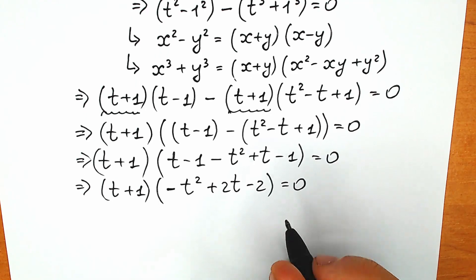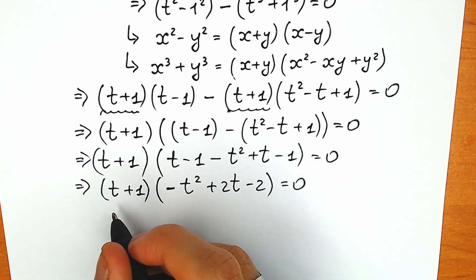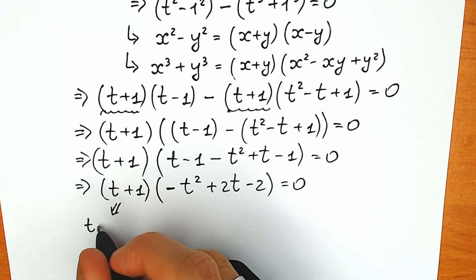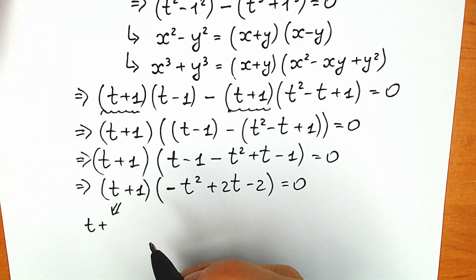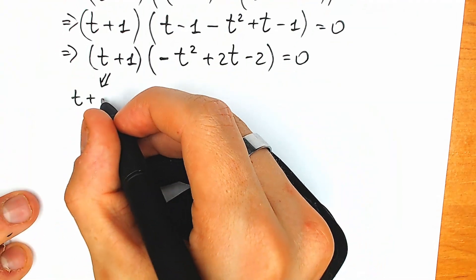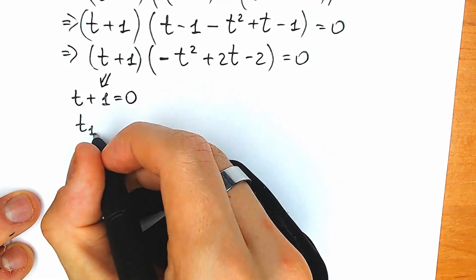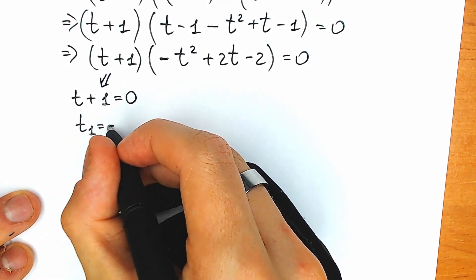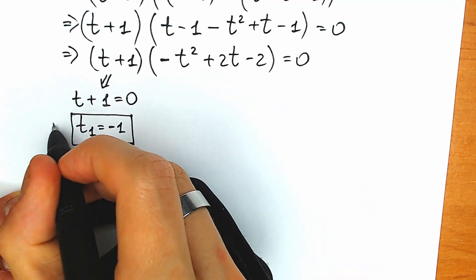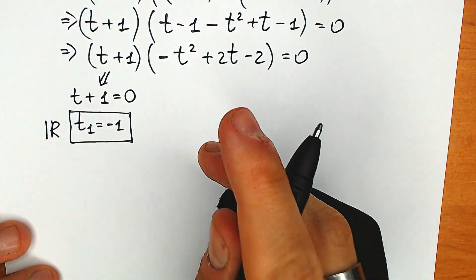A product of two parentheses equals zero when the first parenthesis is equal to zero. So we have t plus 1 equals zero, giving us t₁ equals minus 1. We can easily solve this — it's our first real number root.